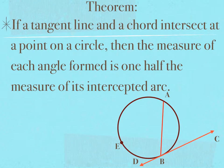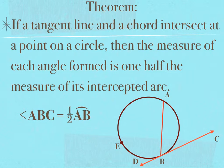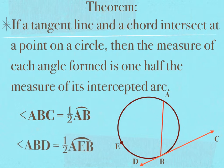I'm going to go ahead and name my points. This theorem states that if I wanted to find the measure of angle ABC, I could take one-half the measure of the arc intercepted. The arc intercepted by angle ABC is arc AB, so angle ABC equals one-half arc AB. If I wanted to find the measure of angle ABD, I could do the same thing by taking half of its intercepted arc. Angle ABD intercepts arc AEB, so angle ABD equals one-half arc AEB.